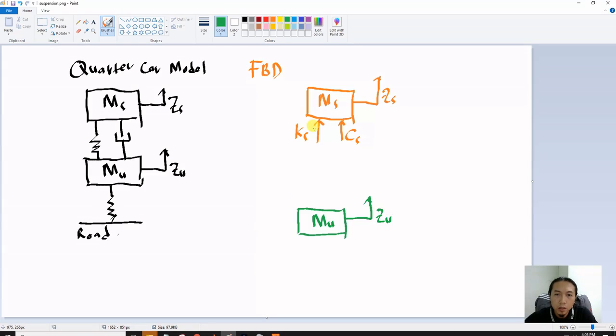And then the reaction here. Since this direction is upwards for the sprung mass, for the unsprung mass become downwards.